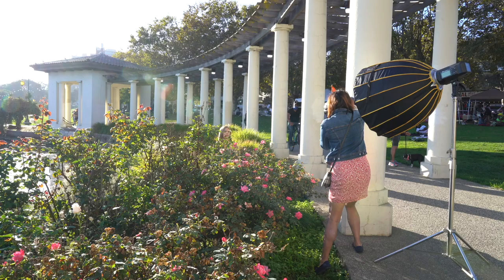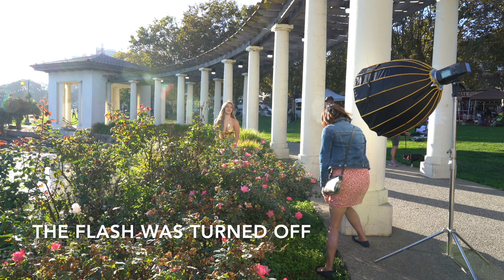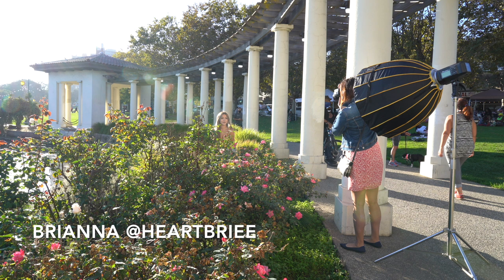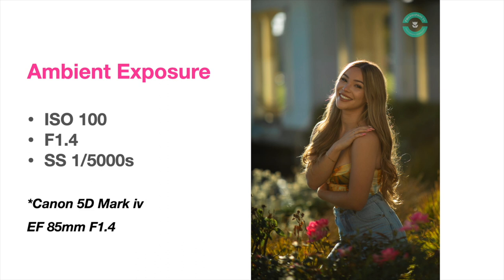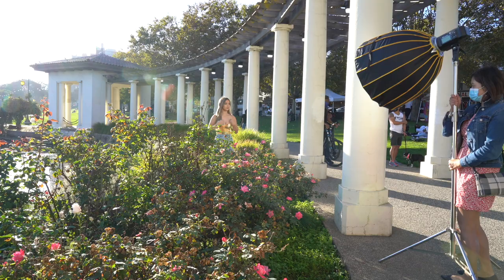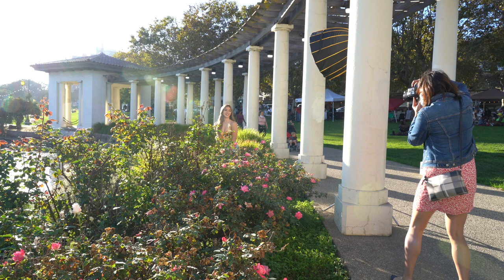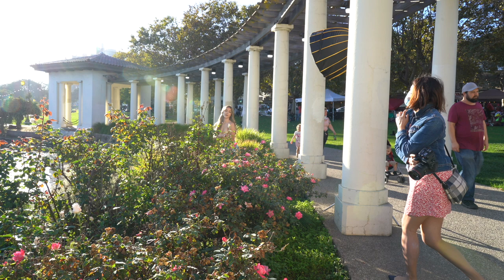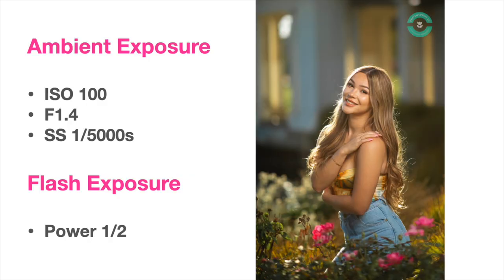I placed Brianna at this spot for a few reasons. First, I saw the beautiful hair light on her hair. Second, there were long grass and flowers to be my foreground. Before I turn on the flash, I expose for the ambient light — this is my ambient exposure. Once I get my desired ambient light, I turn on the flash. Here's the photo with the flash.